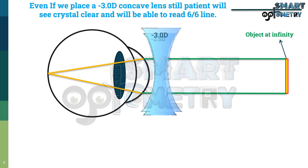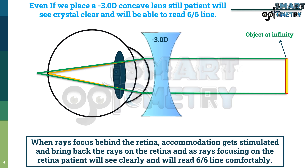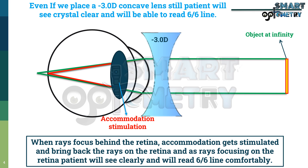If we place a -3 diopter concave lens at the spectacle plane, the rays will focus behind the retina. As rays are focusing behind the retina, the patient should see blur, but it doesn't happen. When rays focus behind the retina, accommodation gets stimulated and brings the rays back onto the retina, so the patient will see clearly and read the 6/6 line comfortably. This is the reason why a myopic patient sees clearly and is able to read the 6/6 line even with over-correction of myopia — by the help of accommodation.